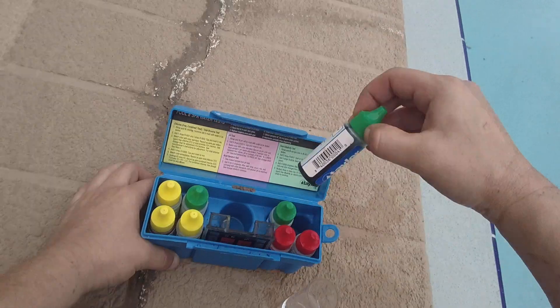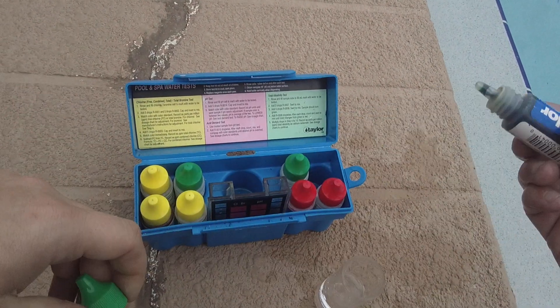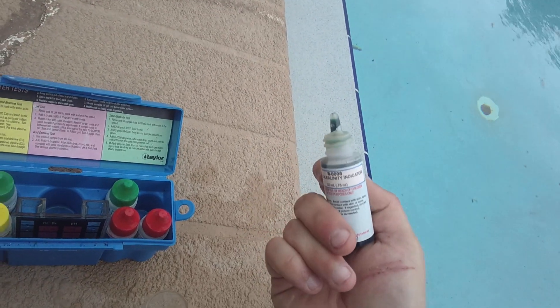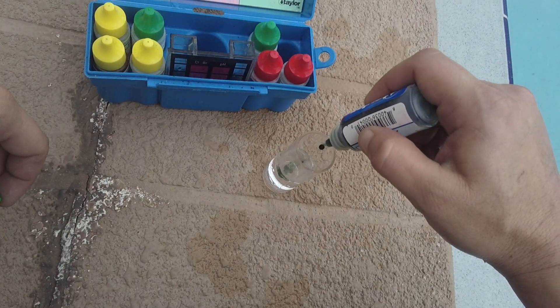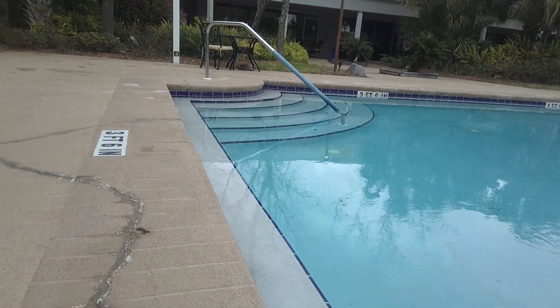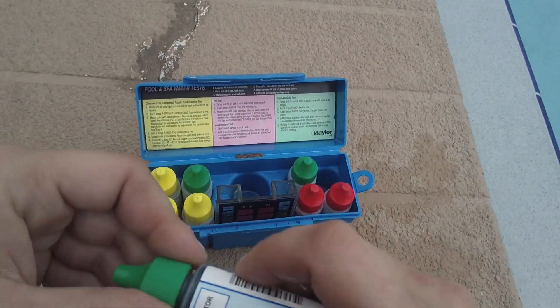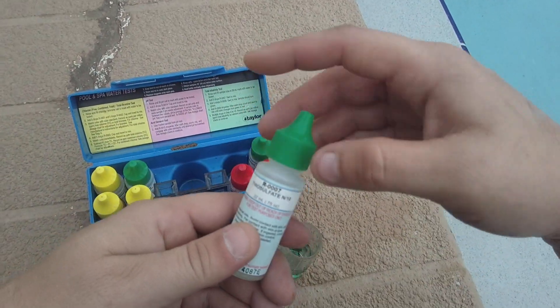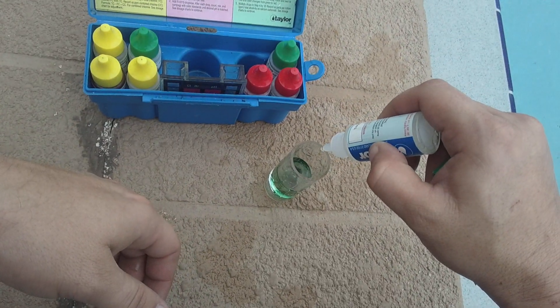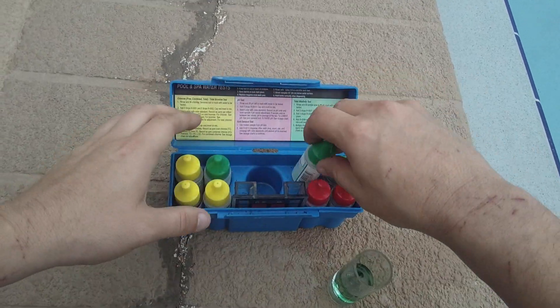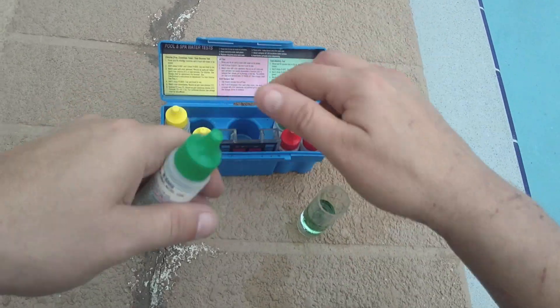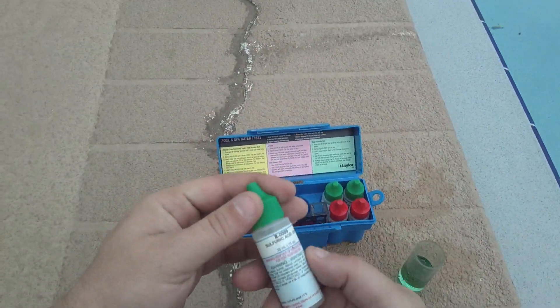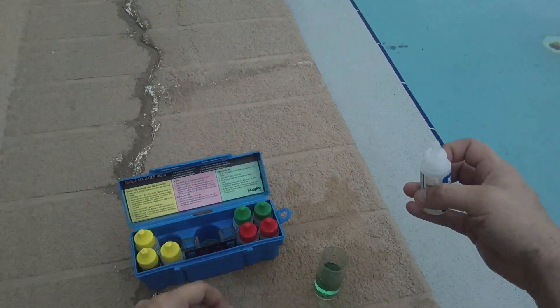This is the sulfuric acid, there it is. And it says to add five drops of number eight: one, two, three, four, five - five drops of that. Oh, and add two drops of number seven thiosulfate: one, two, swirl. Alright, now what we're gonna do is add this sulfuric acid until this turns a red color, drop by drop.